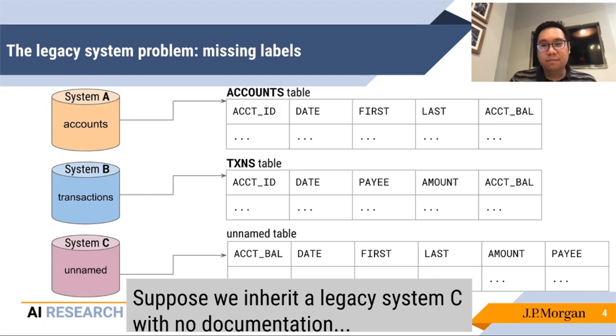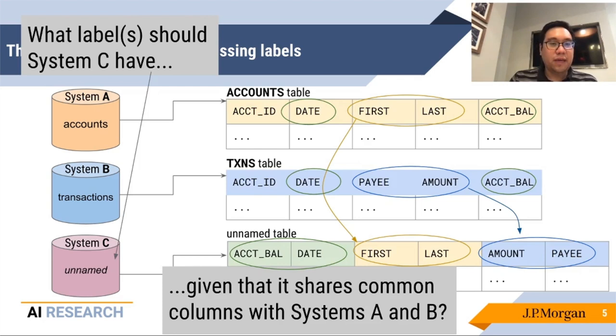We don't know whether this is an accounts database or transactions database. In fact, we don't even have a name for this table, but we do have names for the fields, and some of these look familiar based on what we see in A and B. Now the problem here is, can we use this information, the fact that we see names in common for the fields of the table, to give a label or probability of having labels for this system.